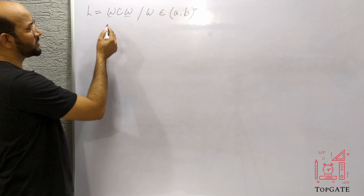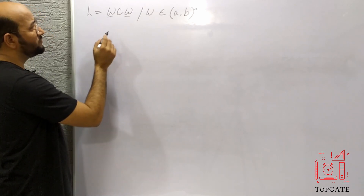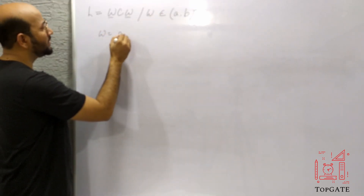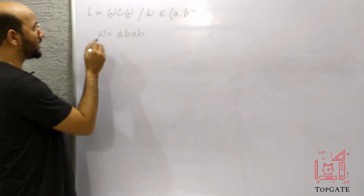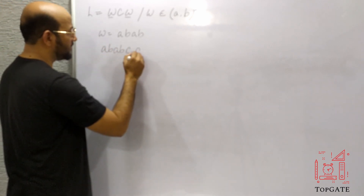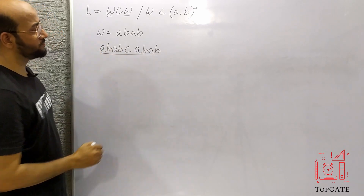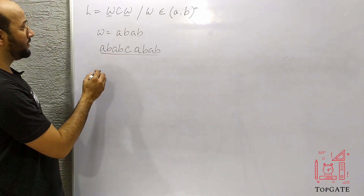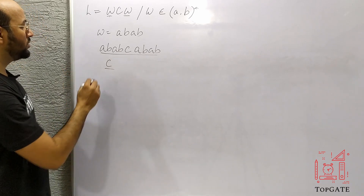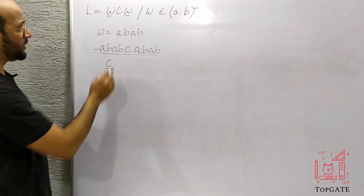Any combination means the string W can start with A or with B. Whatever characters we have here, we should have the same characters after the C also. So if W = ABAB, then the string will be ABAB followed by C then again ABAB. If W is null, the string will be only C. So any combination of A and B can appear in both occurrences of W.